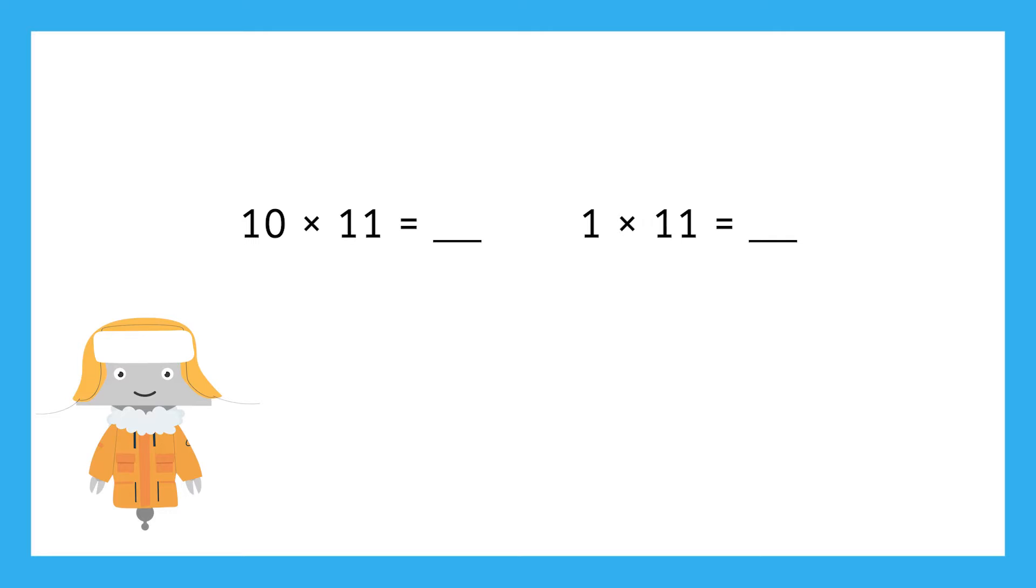Here we have 10 times 11 and 1 times 11. And these problems can be used to help us solve 11 times 11. Huh. Why do you think Bevan used the factors 10 and 1? Oh, because 10 plus 1 equals 11. Interesting. So, 10 times 11 is 110. And 1 times 11 is 11.